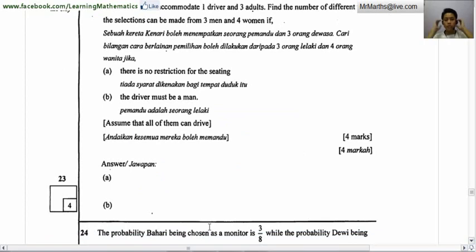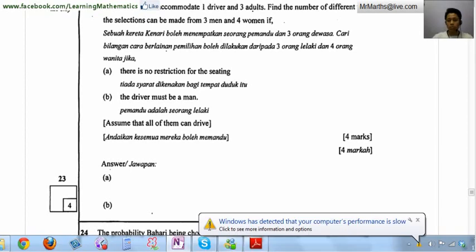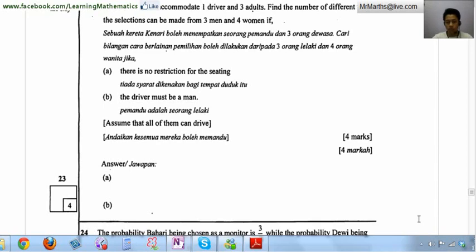A canary can accommodate 1 driver and 3 adults. Find the number of different ways the selection can be made from 3 men and 4 women. If there is no restriction for the seating, then we do combination. This is not about permutation but combination, so we want to have 4 out of the 7 people to fit into the car.